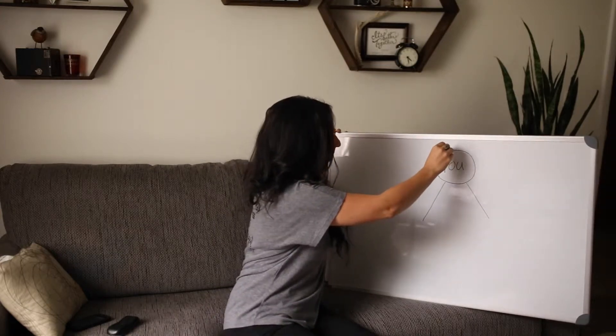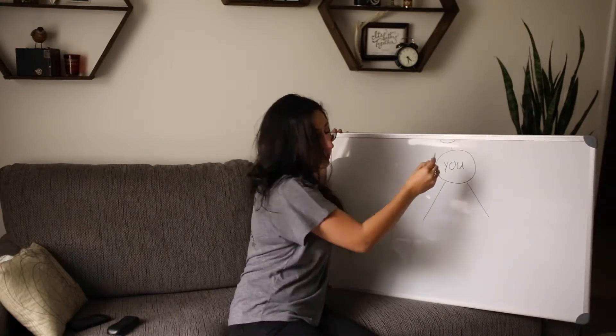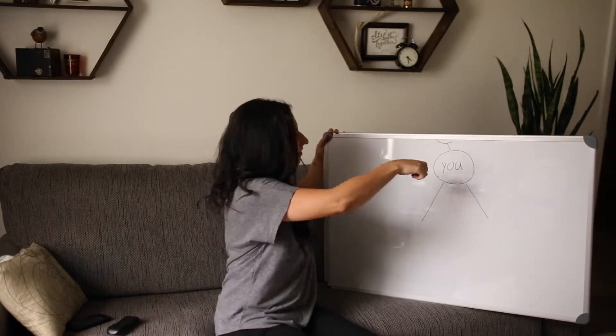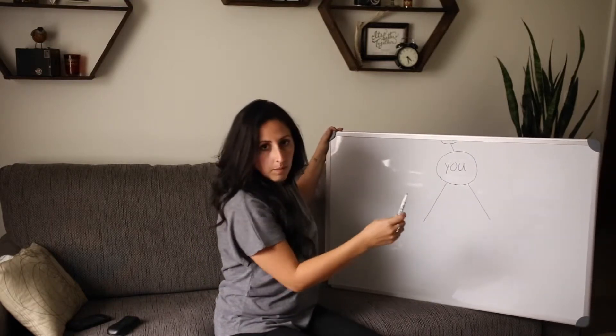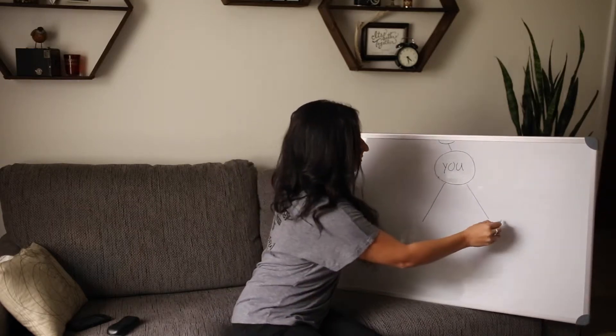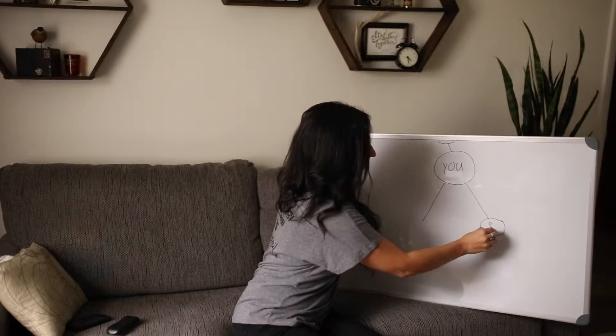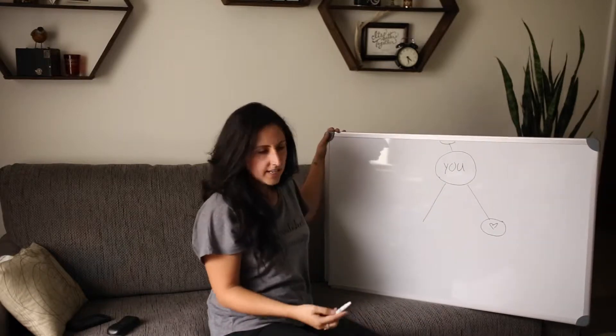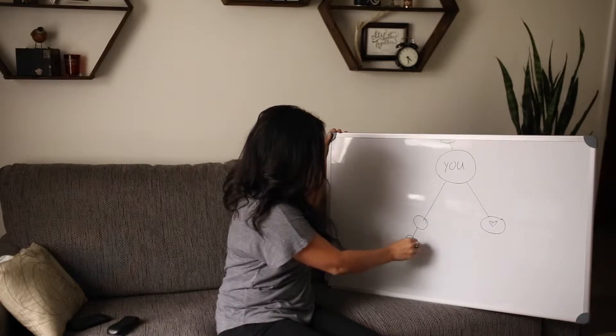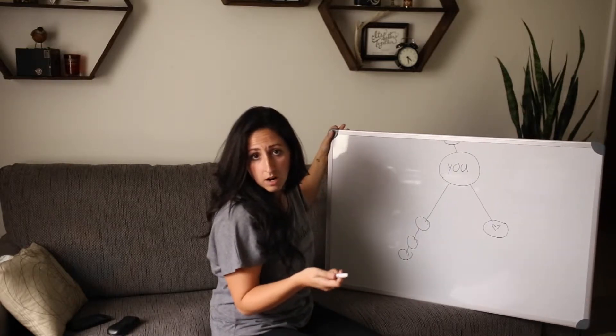You also have people above you. So like me, for example, if you sign up with me, you are on one of my legs, so I'm up here. And then you can put people in both legs. Let's say that you sign up your spouse as a coach, and they go right here. And then all of a sudden you notice that there are people being signed up under you on this side that you have no idea who they are.